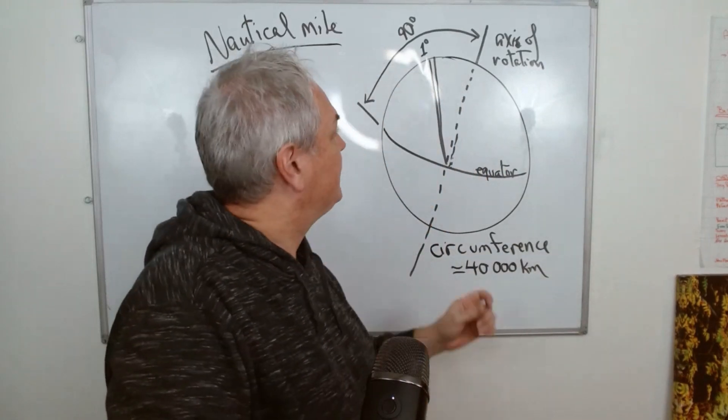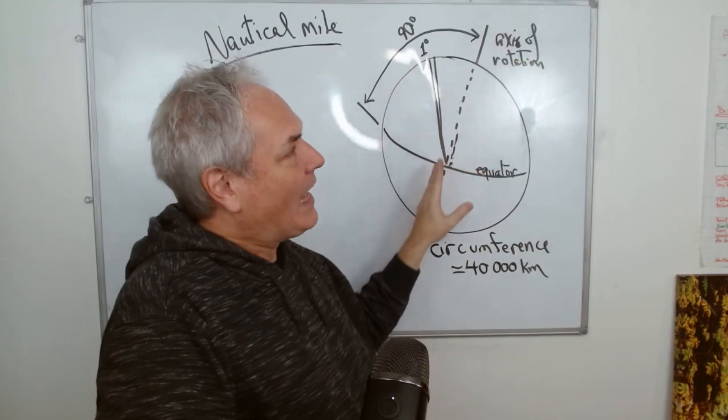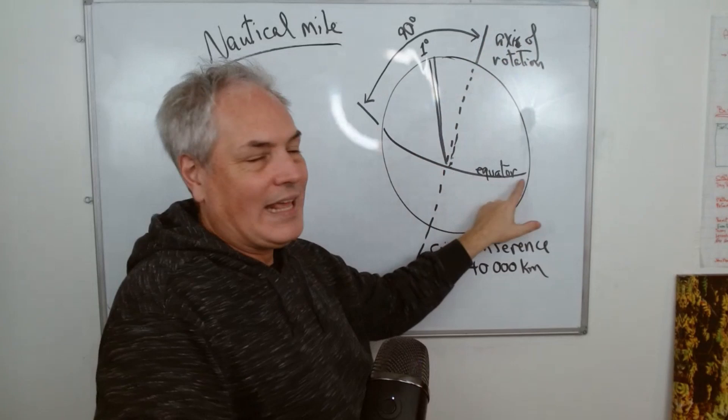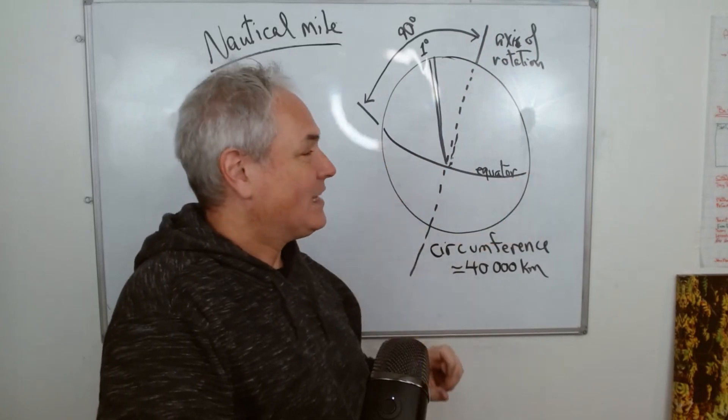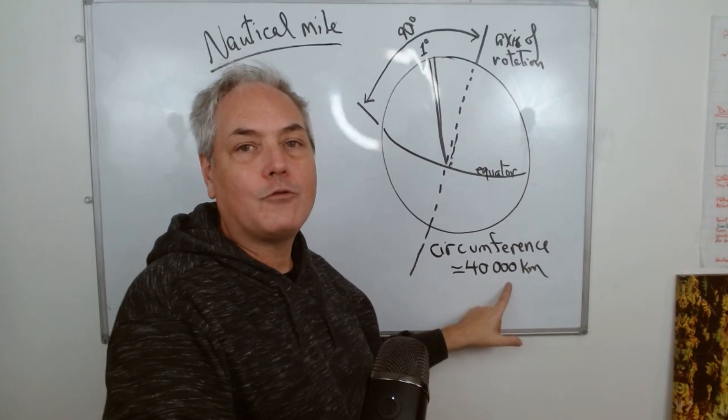In order to answer that question, we have to do a bit of geometry. Here we have our planet, this is Earth, we have the axis of rotation, and we have here the equator right here. What's interesting is that the circumference of the planet is about 40,000 kilometers.